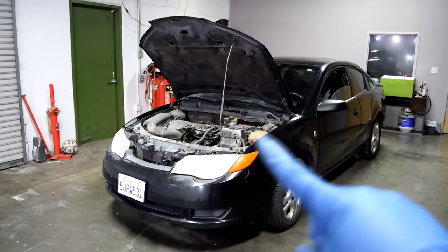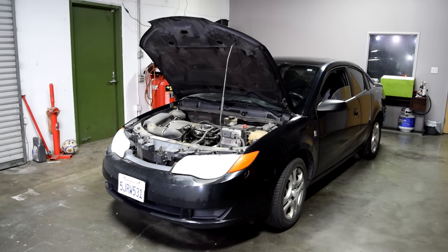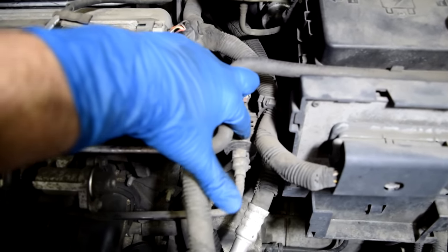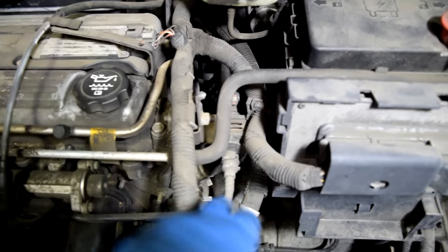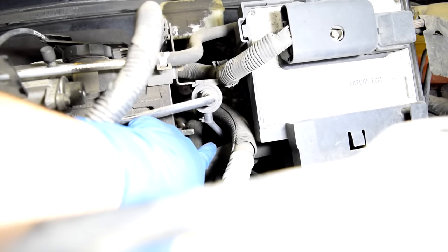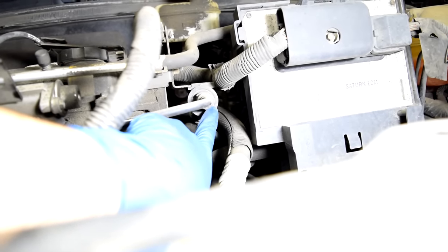All right, now let me show you how the purge solenoid looks on this 2004 Saturn Ion. So here's a look at our purge solenoid on this car. It's this piece right here. This is the line that goes from our purge solenoid to our intake. This is going to be hard showing you guys, but see that line that goes from underneath into the solenoid? That's the line where it comes from your charcoal canister.